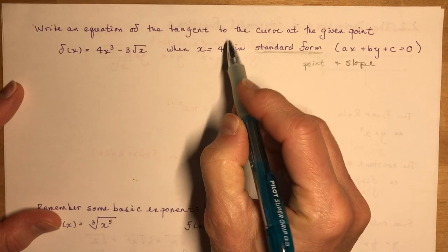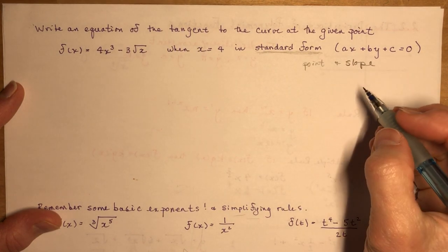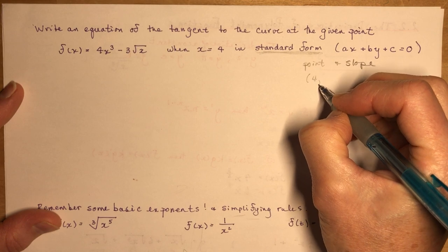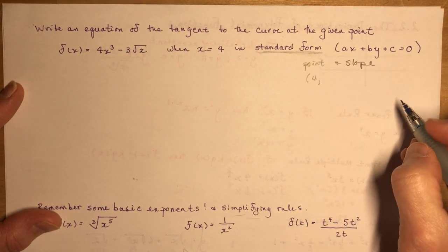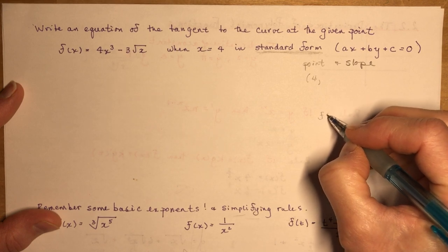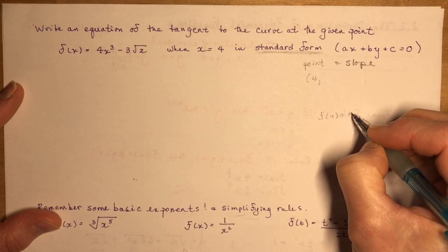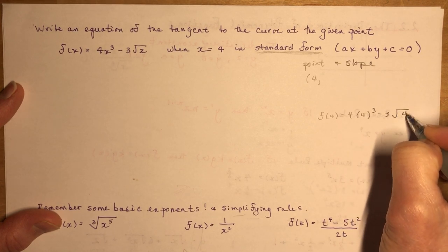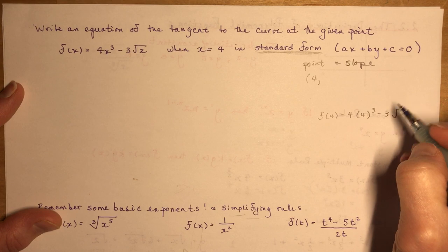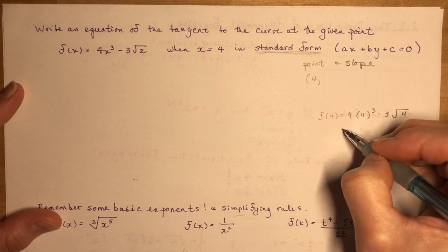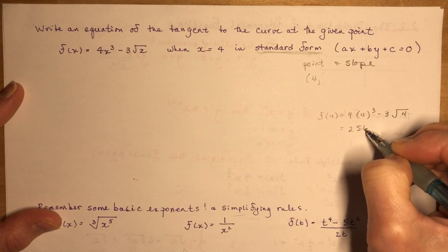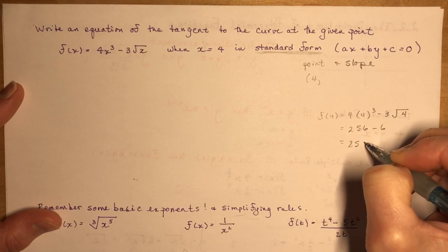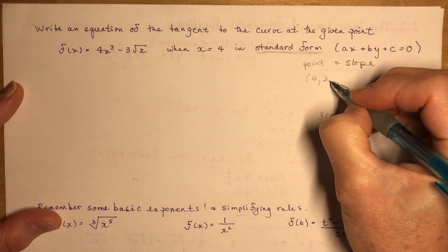They said when x = 4, but that's not a point — I need the coordinates. So I find f(4): f(4) = 4(4)³ − 3√4 = 4(64) − 3(2) = 256 − 6 = 250. So my point is (4, 250).